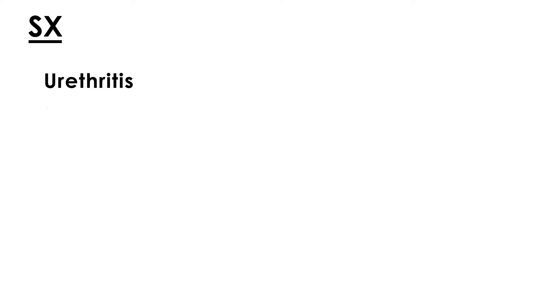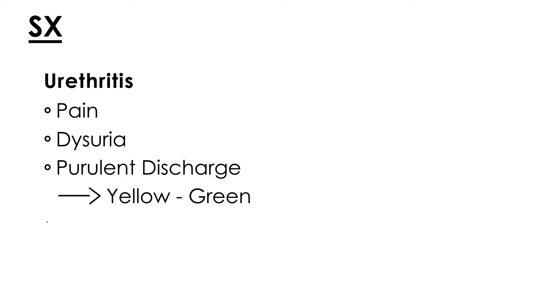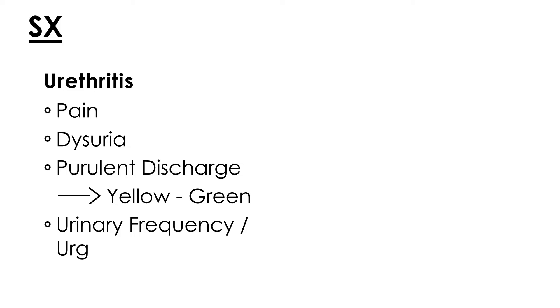In terms of symptoms, for the most common type — infection of the urethra — you'll have pain, particularly pain during urination, known as dysuria. You'll also have a characteristic yellow-green discharge, urinary frequency, and a sense of urgency.